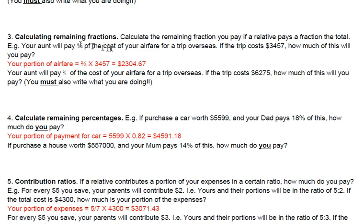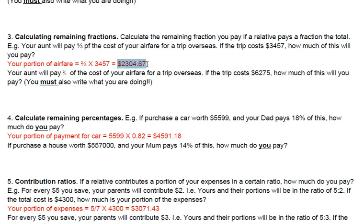Calculating remaining fractions, number 3. Calculate the remaining fraction if a relative pays a fraction of the total. For example, your aunt will pay one-third of the cost of your airfare for a trip costing $3,457. Your portion is the remaining fraction — one-third has been paid by the aunt, so the remaining fraction you need to pay is two-thirds. Your portion of the airfare equals two-thirds times the total amount, and on your calculator you get the result to two decimal places.